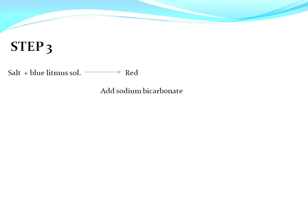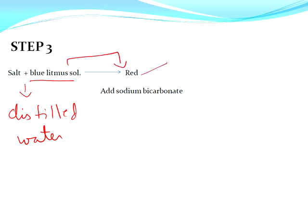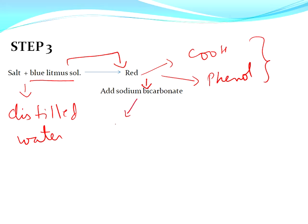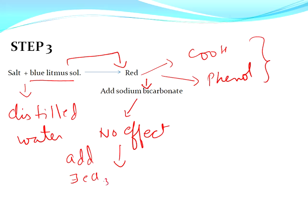Step number three: take the organic compound, add distilled water and blue litmus. If blue litmus turns red, there are two possibilities — carboxylic acid or phenol. For confirmation, add sodium bicarbonate. If no effect occurs, then add FeCl3 solution. If violet color appears, then phenol is confirmed.